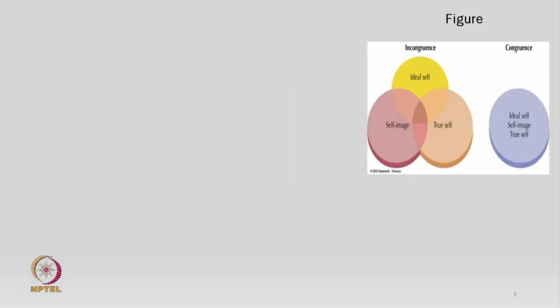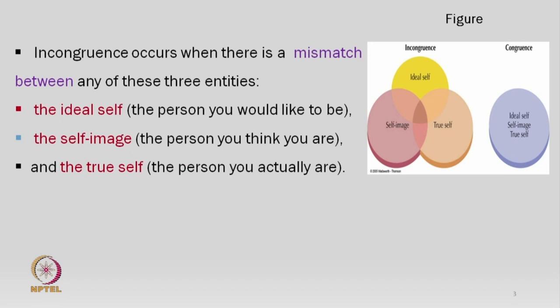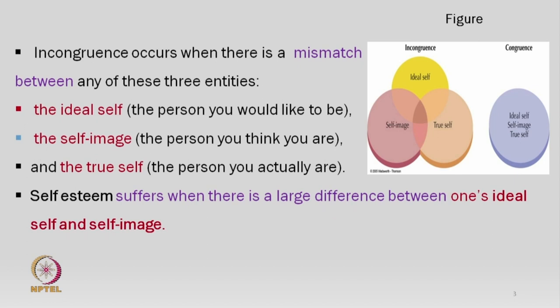Namaskar. In this series, our next topic is the self and related concepts. Let us first revisit the humanistic perspective self theory, where Carl Rogers discussed different types of selves: the ideal self, self-image, and the true self. The ideal self is the person you would like to be, self-image is the person you think you are, and the true self is the person you actually are.